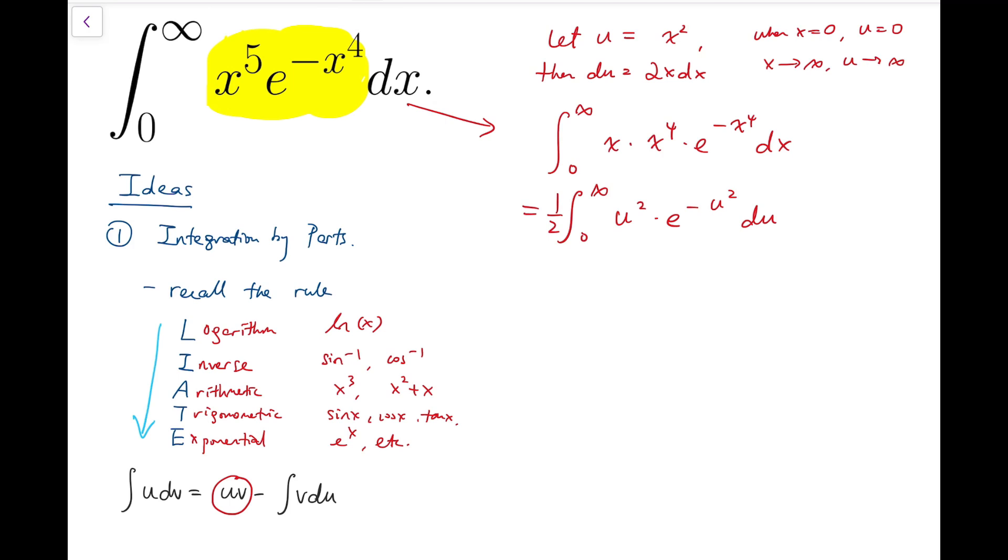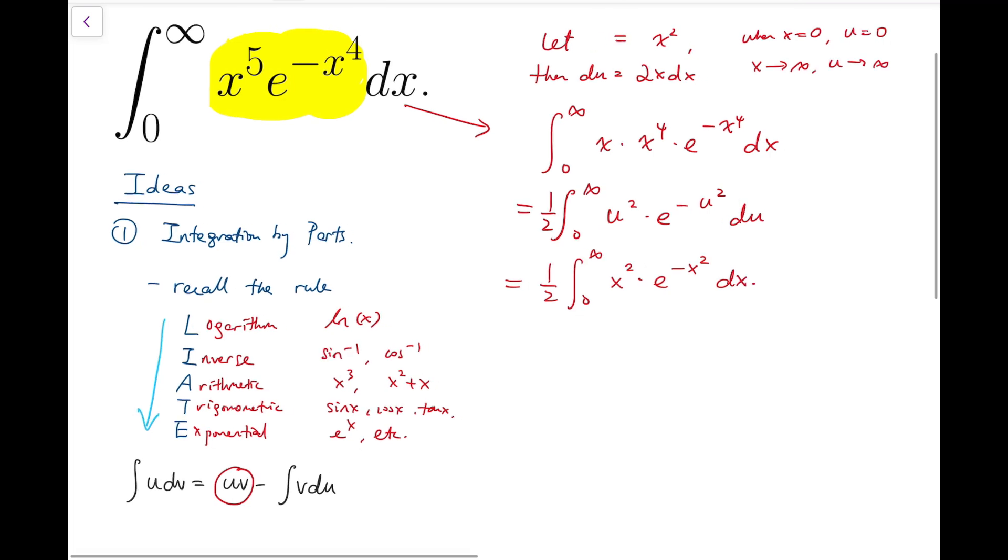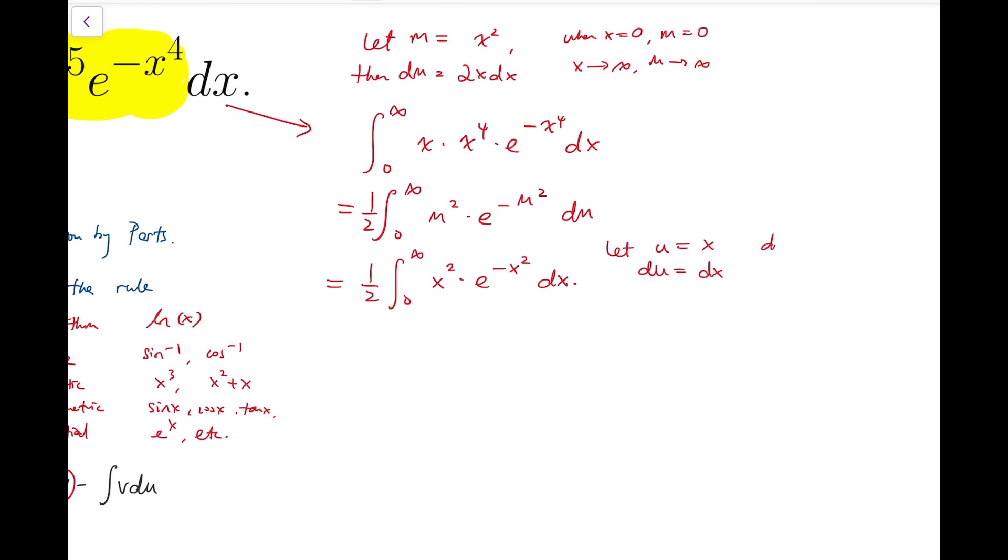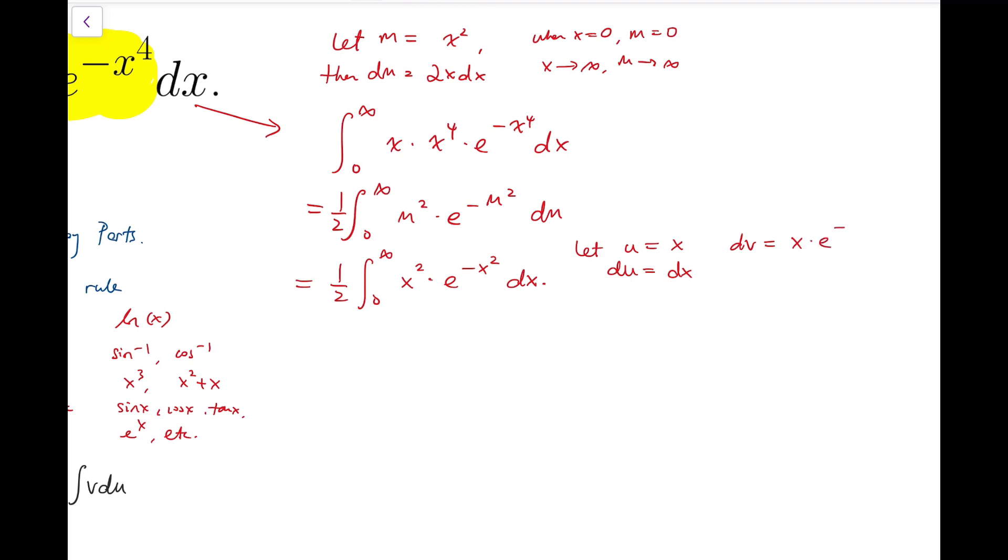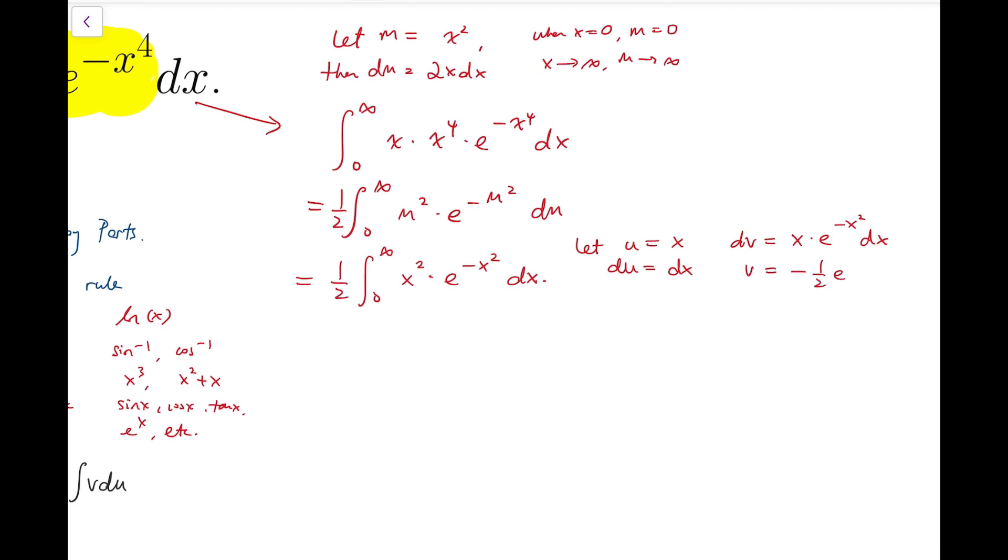Then I'm going to use integration by parts on this integral, u squared times e to the minus u squared dx. Or maybe I can replace this u by something else, say m, so that I can keep using u in the integration by parts step. Here I'm going to let u equals x, and then du equals dx, and then dv according to the formula u dv, I'm going to let dv equals x times e to the minus x squared dx, and this is integrable. Integrating, I'll get v to be equal to minus a half of e to the minus x squared.